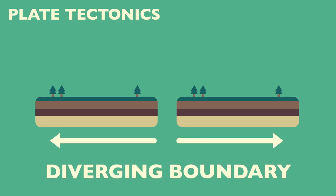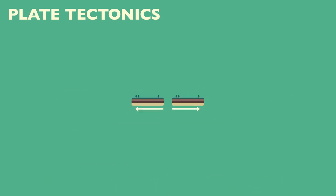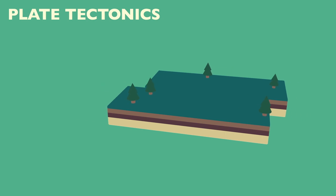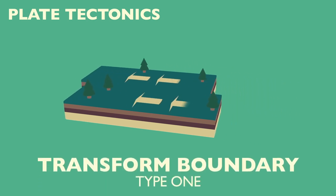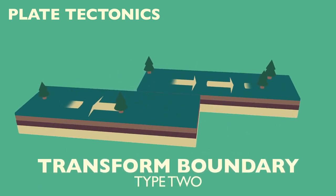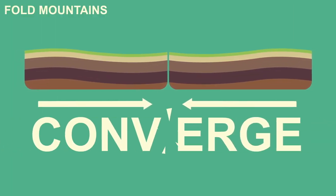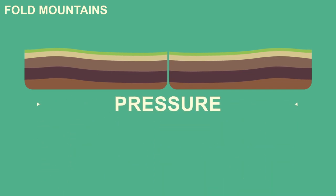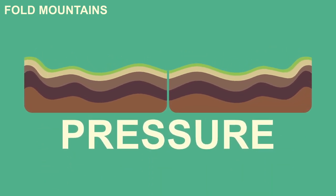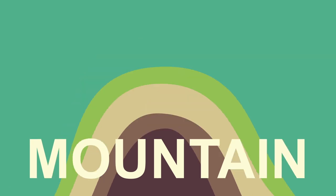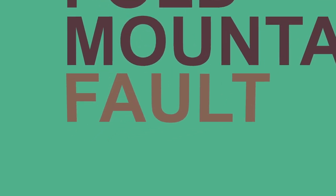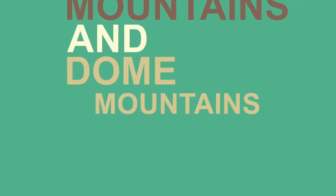Plates can move in different ways: they can move towards each other, or converge; they can move away from each other, or diverge; plates can also move in parallel along a transform boundary. As two plates converge, this creates intense pressure, which can cause the plates to buckle in different ways. This process, over millions of years, can form a mountain. There are three main types of mountain: fold mountains, fault block mountains, and dome mountains.